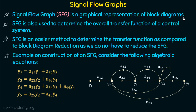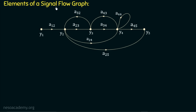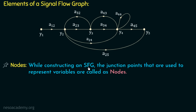Now we will discuss the elements of a signal flow graph. This is the signal flow graph we just created using 4 algebraic equations, and we will use this SFG to understand all the elements. Moving on to the first element: nodes. While constructing an SFG, the junction points used to represent variables are called nodes. In this signal flow graph, we have 5 nodes: Y1, Y2, Y3, Y4, and Y5.